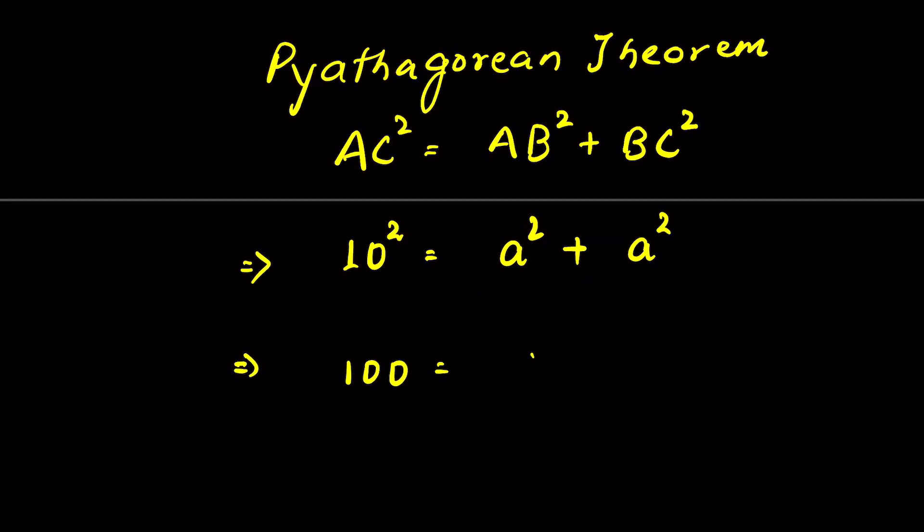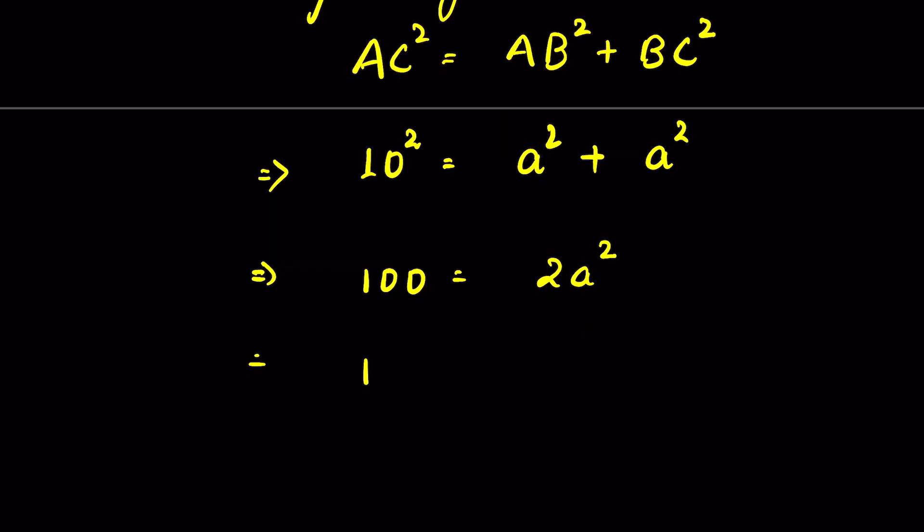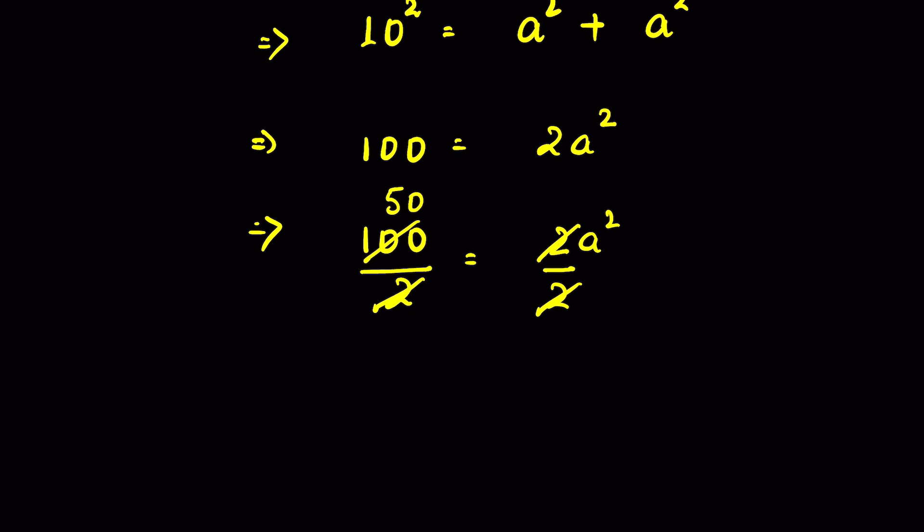10 square is 100. a square plus a square is 2a square equals 100. Let's divide both the sides by 2. So this side 2 and 2 gets cancelled. 2 times 50 is 100. Now, a square is 50.